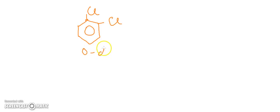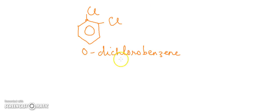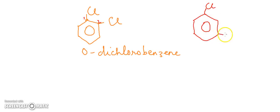Now we can look at examples for the ortho, meta, and para positions. Here is a benzene ring with chlorine as the parent carbon at position one, and chlorine also at the second position — this is ortho-dichlorobenzene. It is 'dichloro' because two chlorine atoms are present, and they are at the one-two (ortho) position. Likewise, if the second substituent is at position three, it is meta-dichlorobenzene.